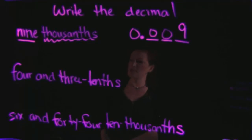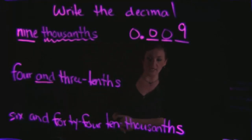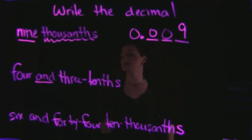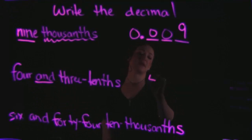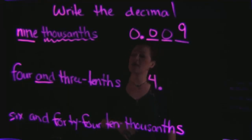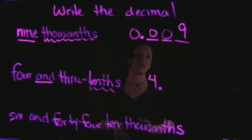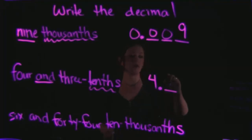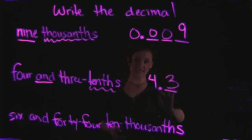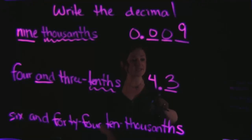The next example we have is four AND three tenths. I do see the word AND in there, so I am looking at a number to the left of the decimal point, and that number is four. So four AND — AND represents my decimal — and then I need to look at the number to the right, which is three tenths. I have the number three, and it needs to end at the tenths place value. The tenths place is just one decimal spot over, so I simply put the three there. There are no empty spots to fill in, so this is simply 4.3 — four AND three tenths.